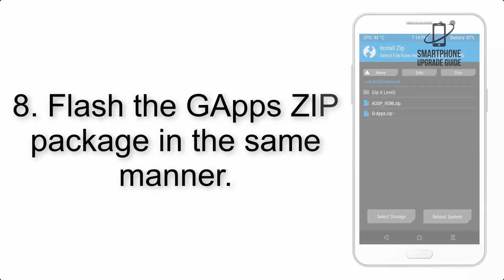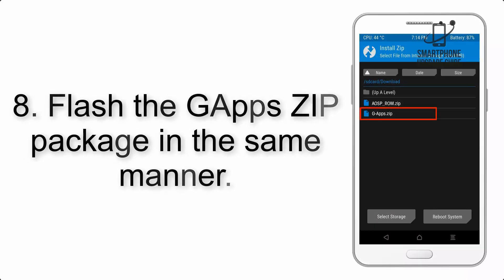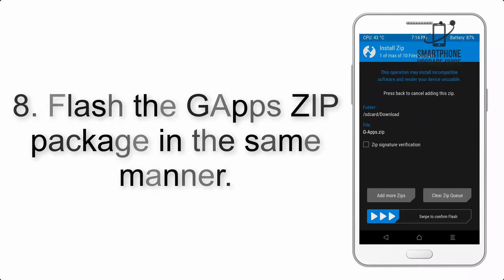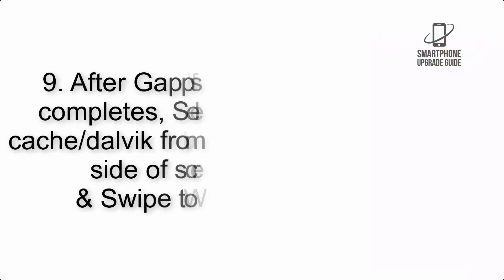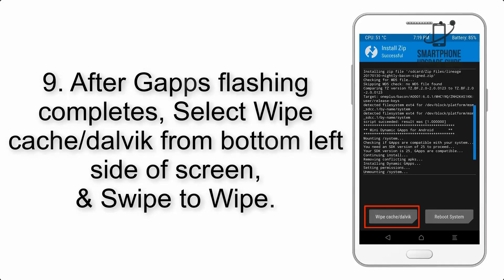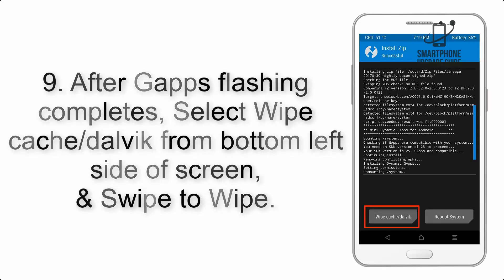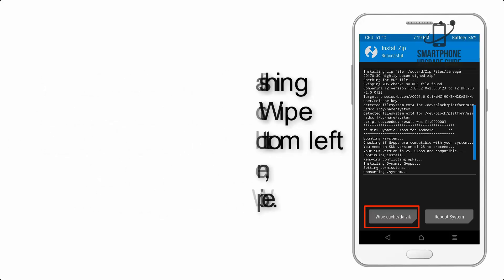Step 8: Flash the GApps zip package in the same manner. Step 9: After GApps flashing completes, select Wipe Cache and Dalvik from the bottom left side of the screen and swipe to Wipe.